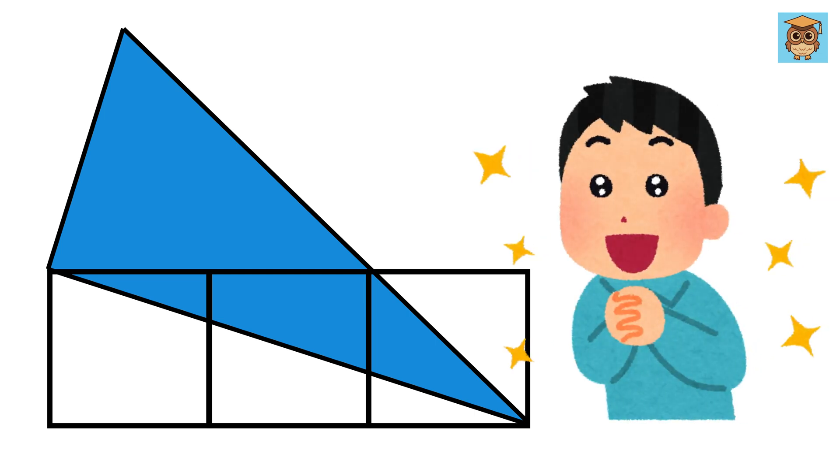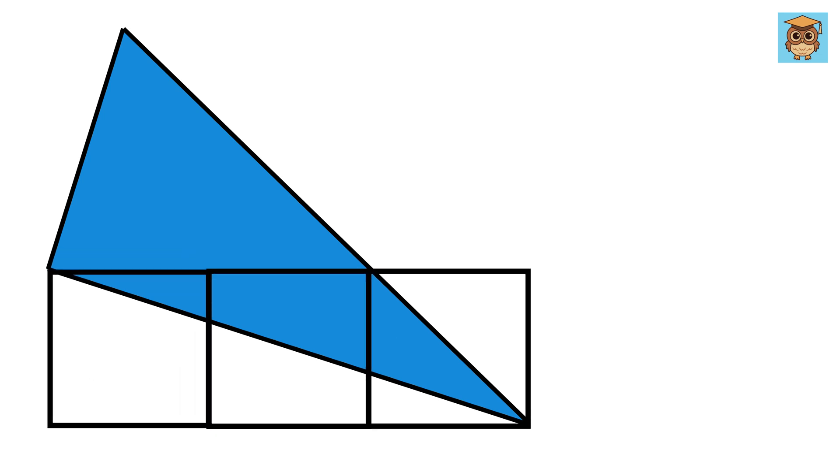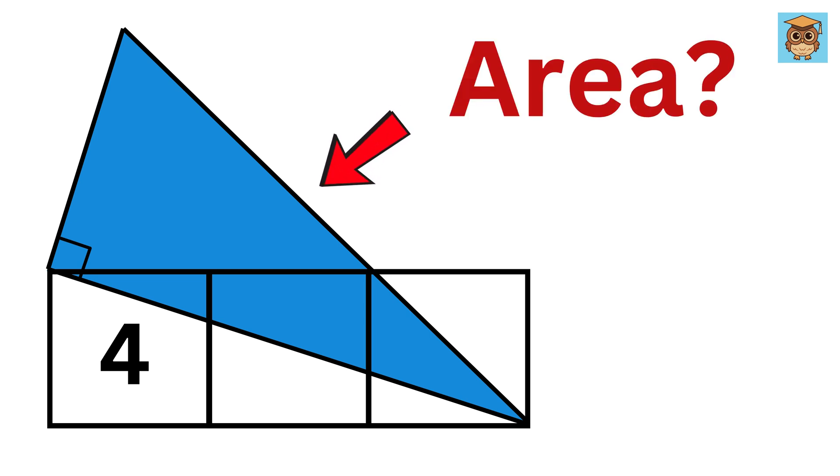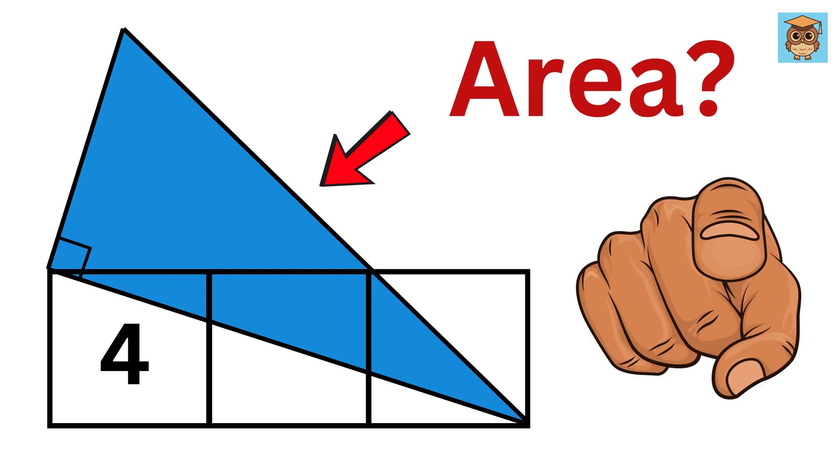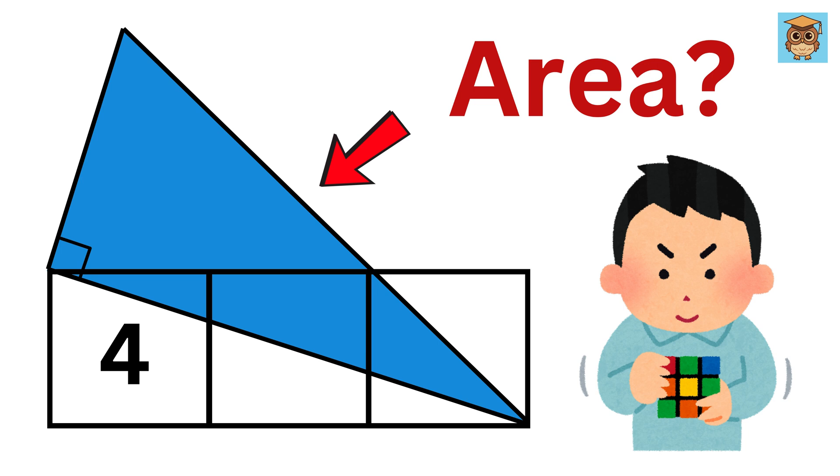This amazing geometry question will make you go sleepless at night. We have three squares, each having an area of four square units, and then we have this blue right-angled triangle. Our job is to find the value of its area. So can you solve it? Okay, we have multiple ways to solve it.